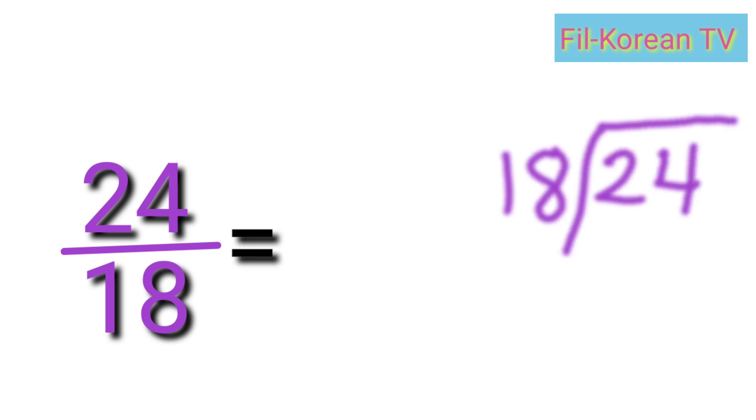Let's try another one: twenty-four over eighteen. So, let's divide. Twenty-four divided by eighteen. Twenty-four divided by eighteen equals one. One times eighteen equals eighteen. Subtract.